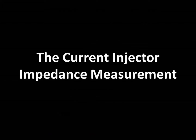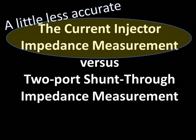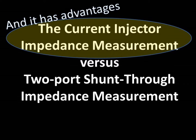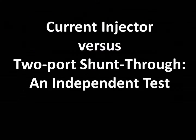With all of those pros and cons in mind, let's return to the issue of impedance measurement. While the current injector is not considered to be as accurate as the two-port measurement, the results are still quite good, and the device offers other benefits. Agilent independently evaluated the PicoTest current injector, comparing it with their own two-port VNA impedance measurement, which is considered the gold standard of impedance measurement in terms of accuracy.